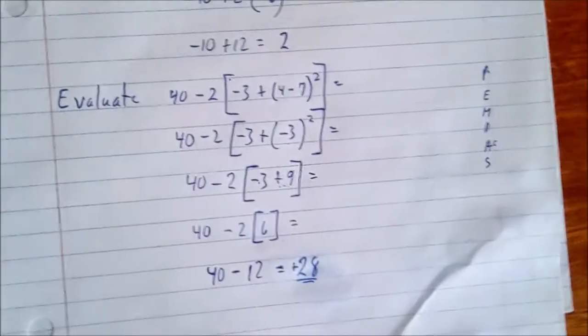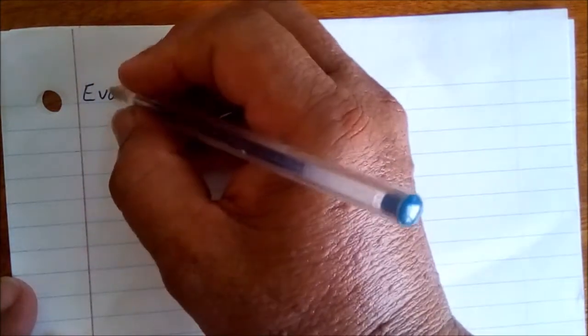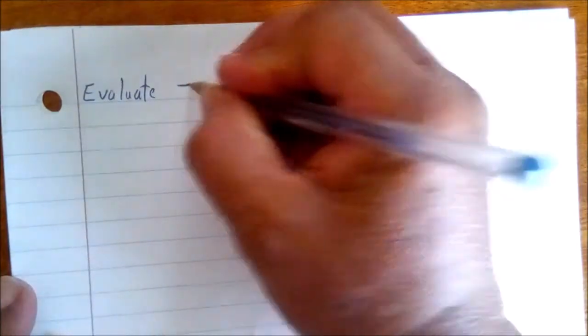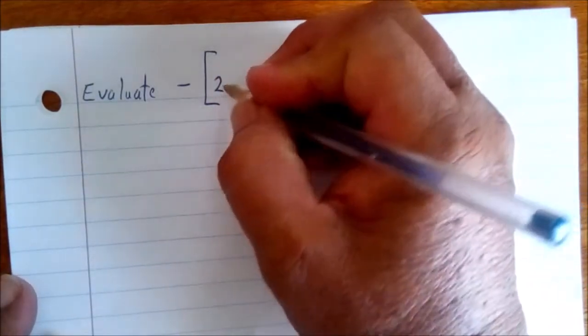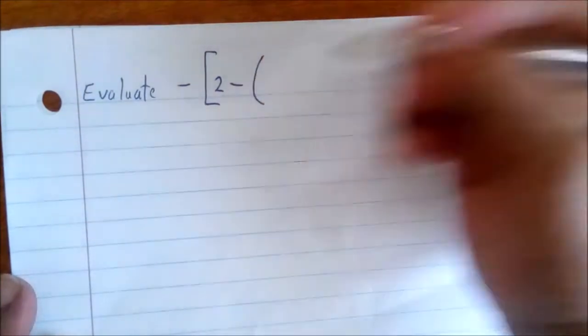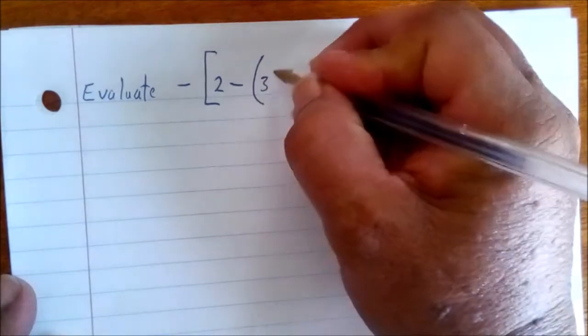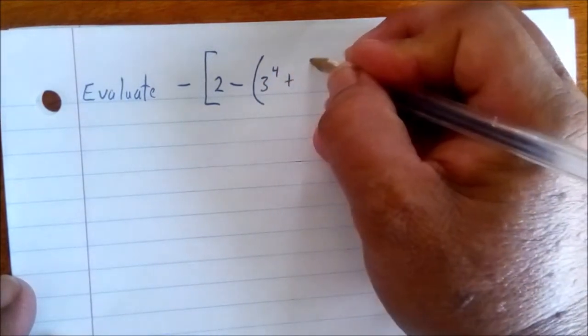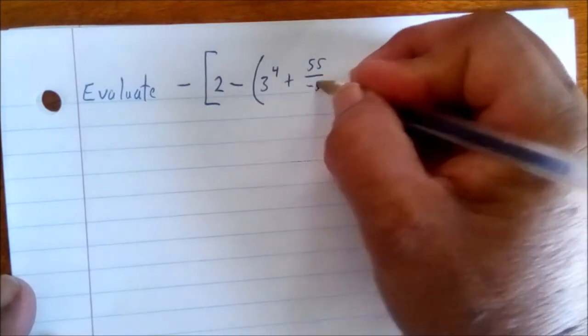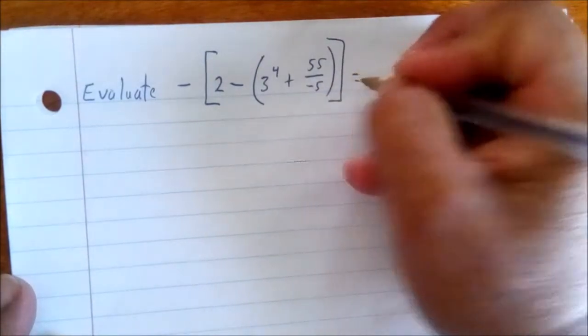Now we go to some other problems where we are putting multiple operations together. Evaluate: negative, open big bracket, 2 take away, open parenthesis, 3 to the fourth plus 55 over negative 5, close parenthesis, close big bracket. Big doesn't mean complicated — just take it piece by piece.